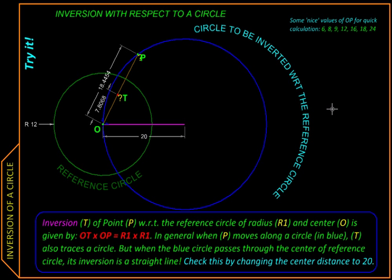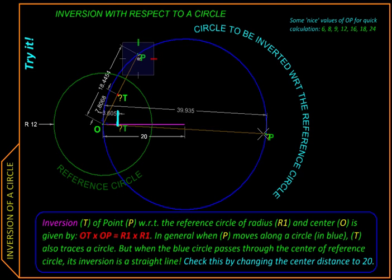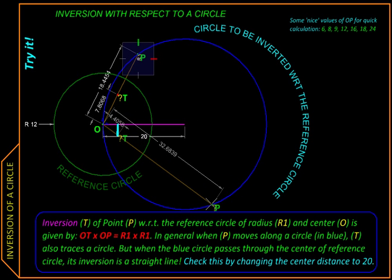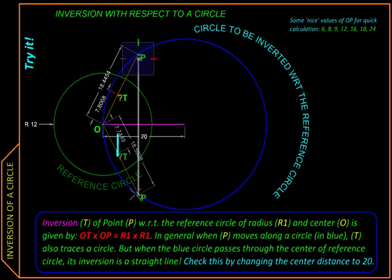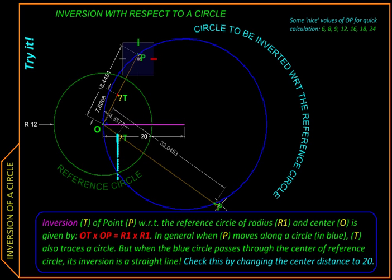This is the idea kinematicians use to construct exact straight-line mechanisms. So they create mechanisms which model the process of inversion into its physical form, and then they make this point P move along a circle which passes through the center of the reference circle, and thereby its image T moves along a straight line.